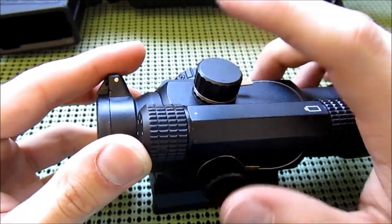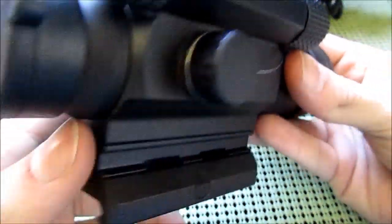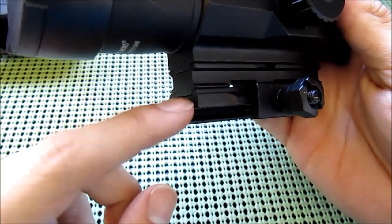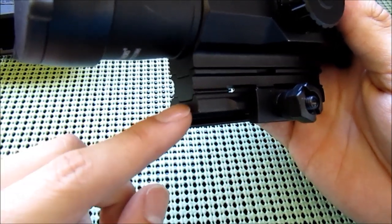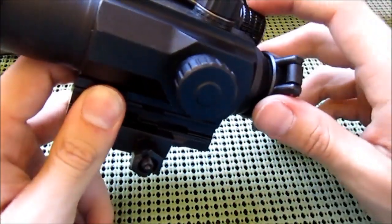It comes with lens caps, and you have your adjustments for windage and elevation right here. Then it comes with this high mount. You can remove this portion right here so you can have a low mount, but you need this high mount if you have an A2 front sight post to clear that.